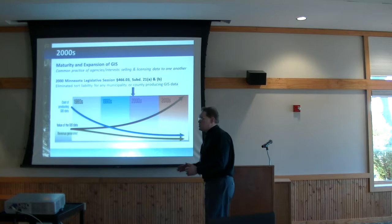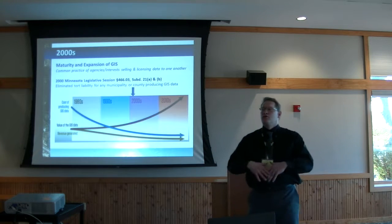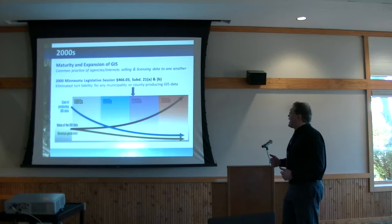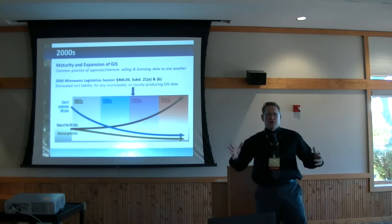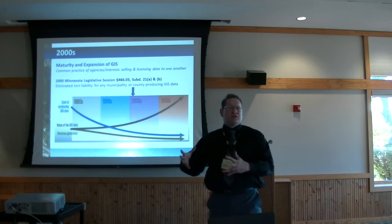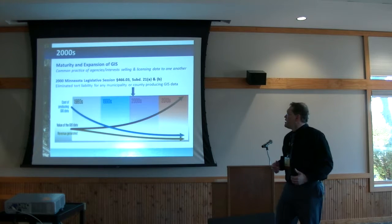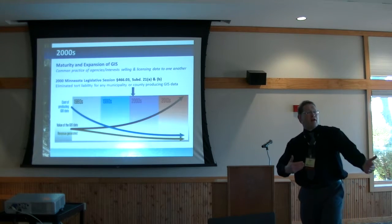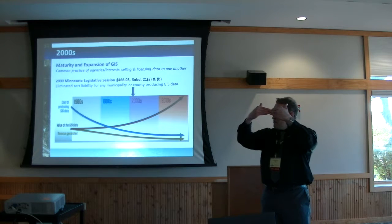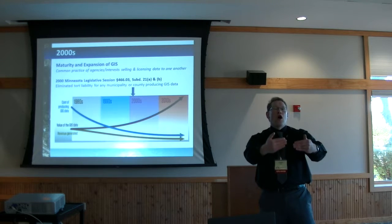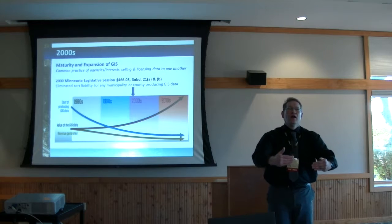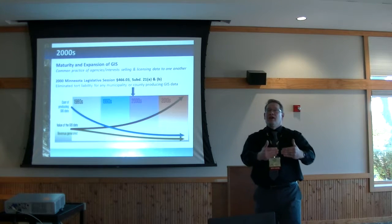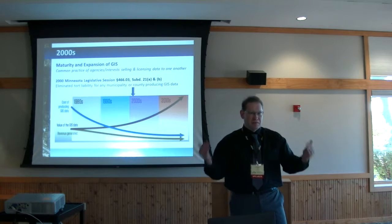Over the decade of the 1990s, GIS proliferated. More people used it, more students came out of college with GIS skills. When cities, counties, and agencies started using each other's data, they worried about liability: could we be sued if our data has errors? An additional piece of legislation was added in the 2000 legislative session that basically eliminated tort liability. If a county produces parcel data and includes a disclaimer — stating it was made for their purposes and makes no claim it will meet your need — they're covered. They can't be sued.